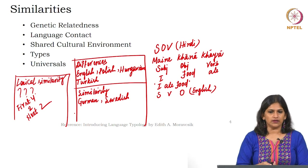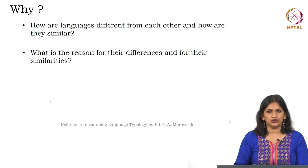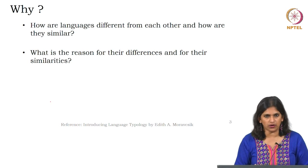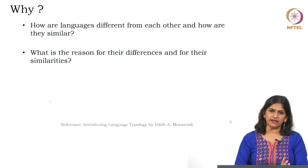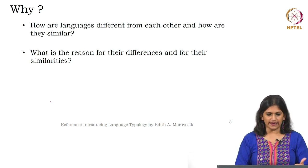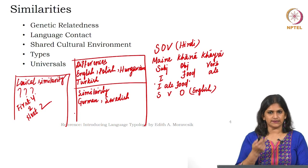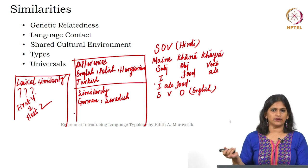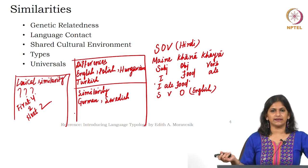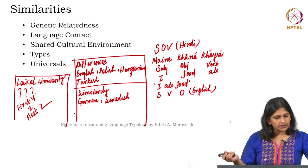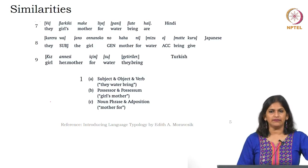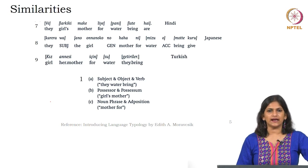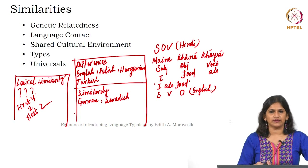With this information, I would like to highlight two questions that I found as a puzzle in Moravzik's book. First question: how are languages different from each other and how are they similar? If there is a similarity, at what level? If there is a difference, at what level? Second: what are the reasons for the differences and for the similarities? We have already discussed the possible reasons. As far as similarities are concerned, you might have genetic relatedness, language contact, shared cultural environment, types, and finally universals. On the basis of universals, you might find certain languages which have certain kinds of connections and certain languages which have certain kinds of differences.